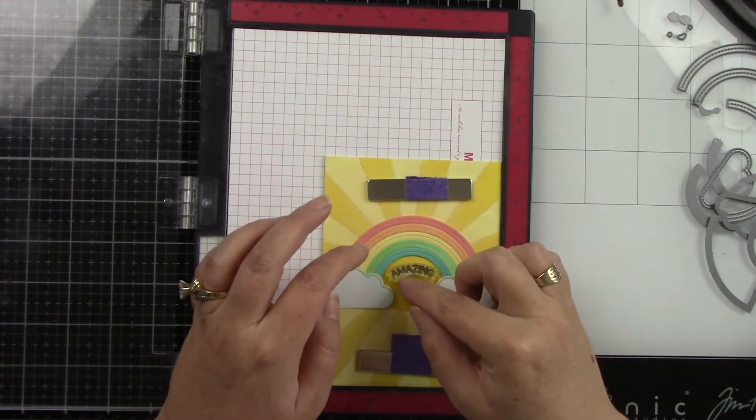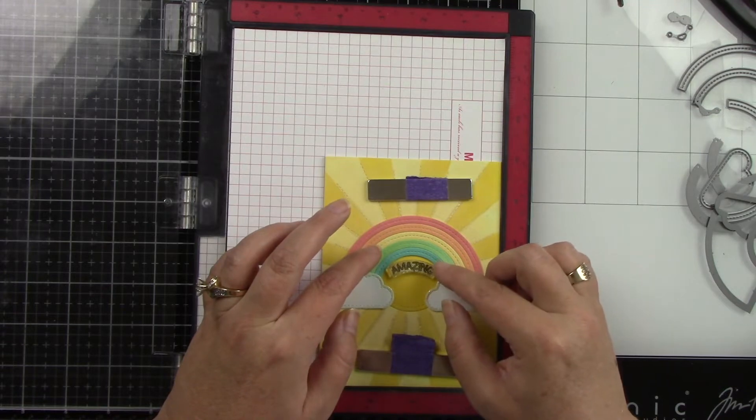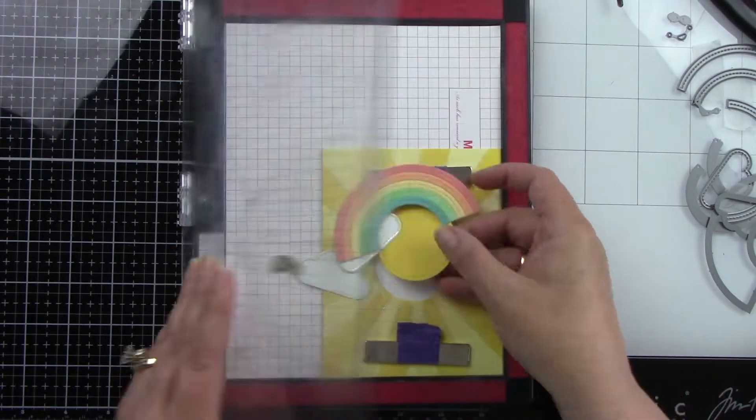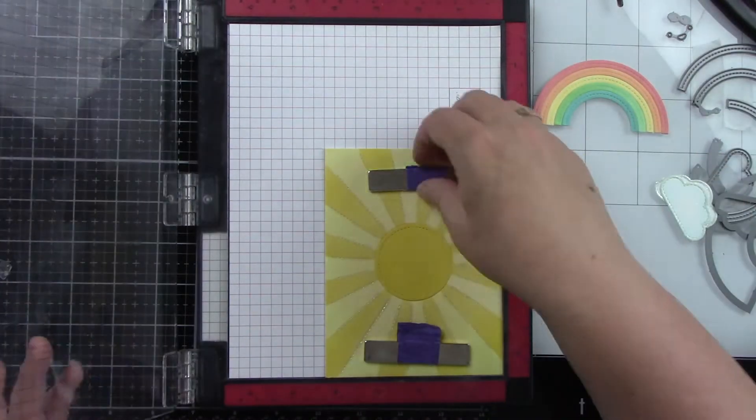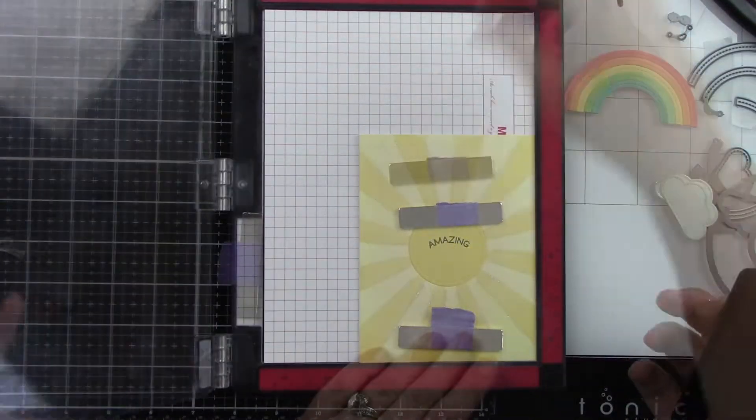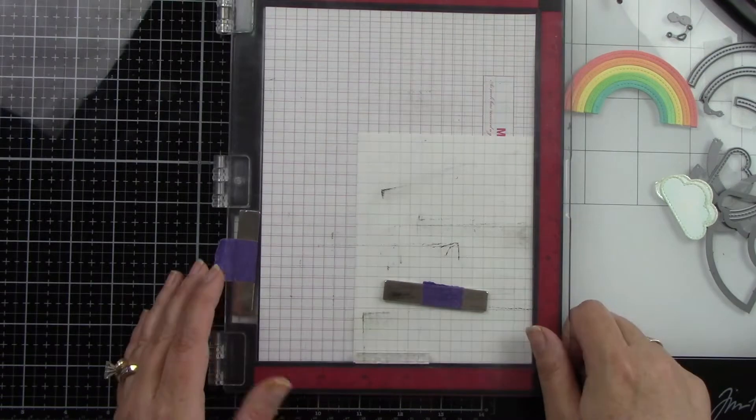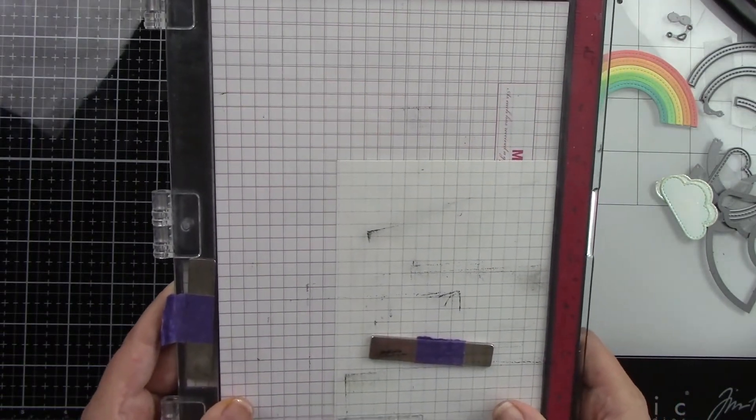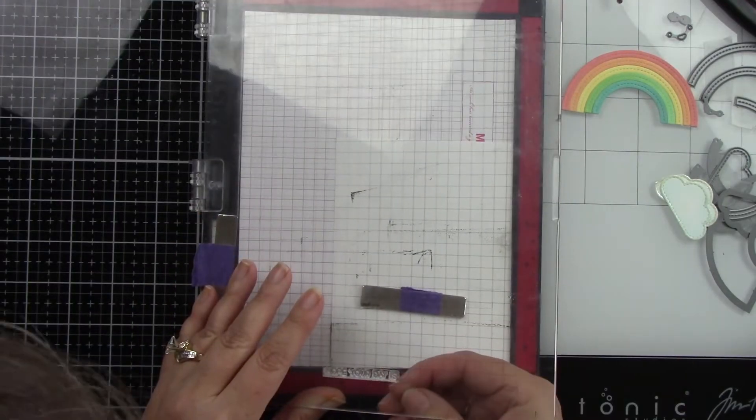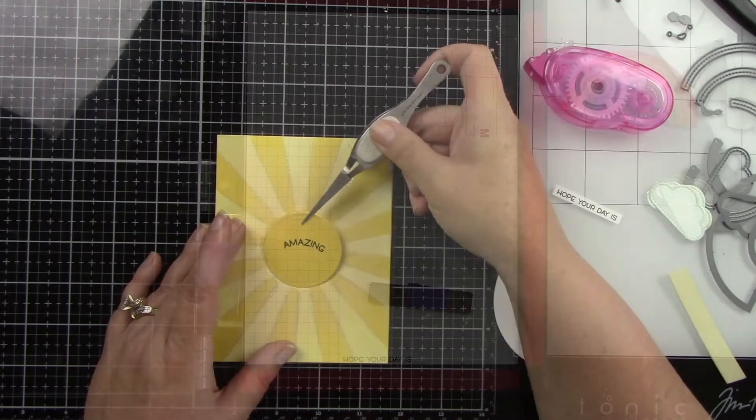So in the Misti, I have the whole background. I want to stamp the sentiment that says 'amazing.' This is from the Reveal Wheel Sentiments. Now I also added some more sentiments a little bit later because when it was done, I just felt like it needed more. But I'm using jet black ink, and I'm just going to stamp that in the curve of the rainbow, which I thought was really perfect. The other part of the sentiment, which says 'hope your day is,' is also from the Reveal Wheel Sentiments. I'm stamping that onto some white cardstock with black ink, lining that up with my Misti, and then I'll just trim that out with my paper trimmer.